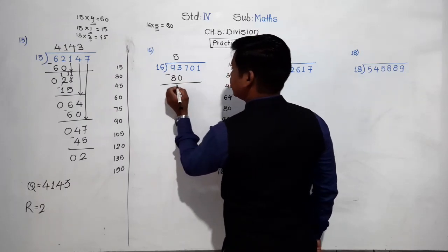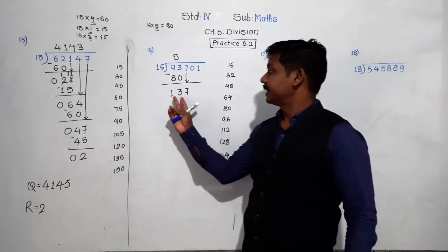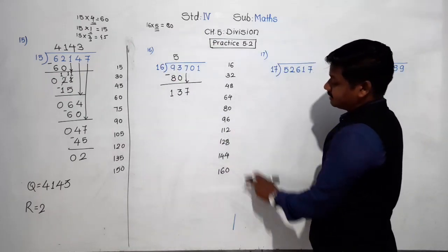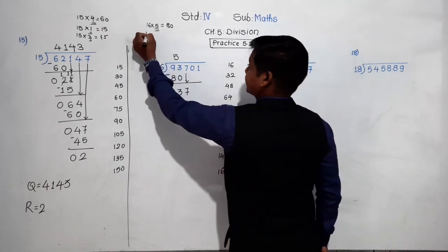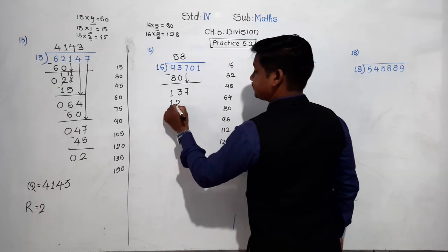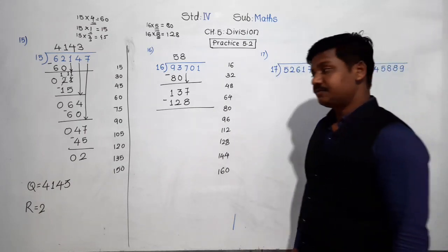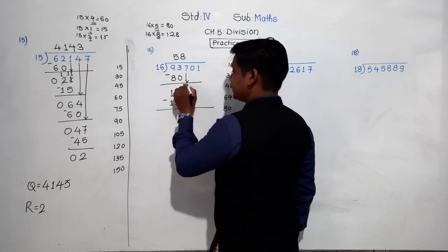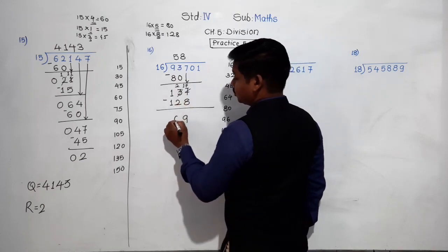3 minus 0 is 3, and 9 minus 8 is 1, giving remainder 13. Bring the next digit down — that is 7. The number becomes 137. Divide 137 by 16. Is there 137 in the table of 16? No. The smaller number than 137 in the table of 16 is 128. So 16 eights are 128. Now subtract 137 minus 128: 7 minus 8 not possible, take borrow — 7 becomes 17, 3 becomes 2. 17 minus 8 is 9, 2 minus 2 is 0, 1 minus 1 is 0. Remainder is 9.